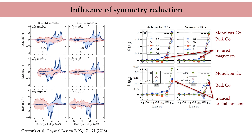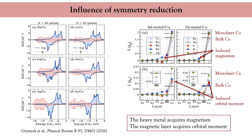The orbital magnetic moment remains about 10 times smaller than the spin magnetic moment, so it does not significantly contribute to magnetism, but it does contribute to other phenomena such as magnetic anisotropy, the Dzyaloshinskii–Moriya interaction, and the Rashba effect.